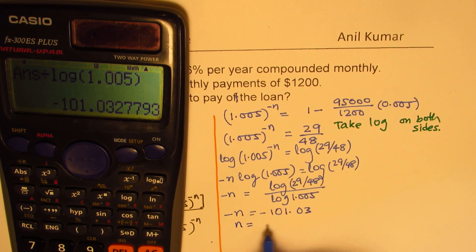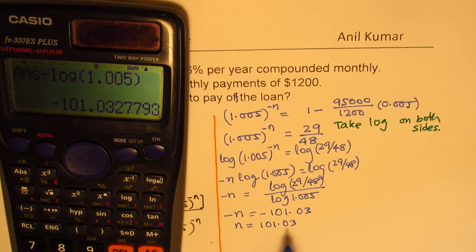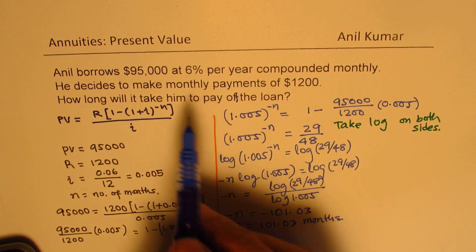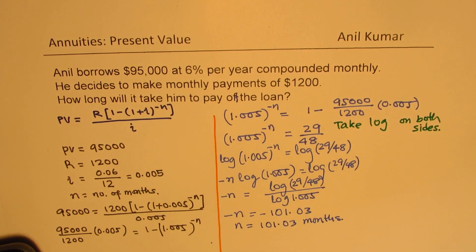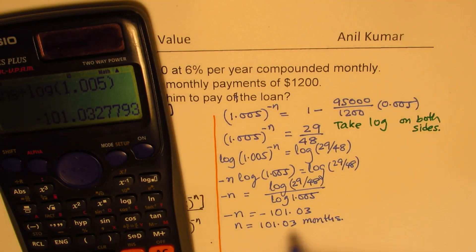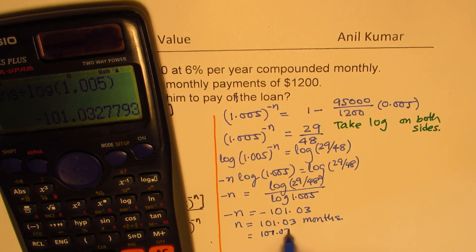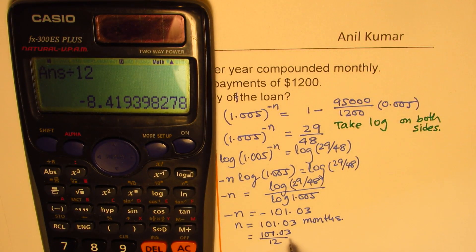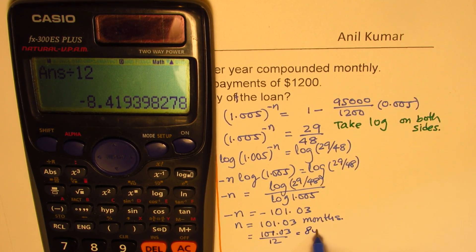So n is 101.03. Now, n is in months, so we get that many months. Since we are compounding monthly, we can divide by 12 to convert to years. So in years, we have 101.03 divided by 12, which gives us 8.41 — so 8 years.